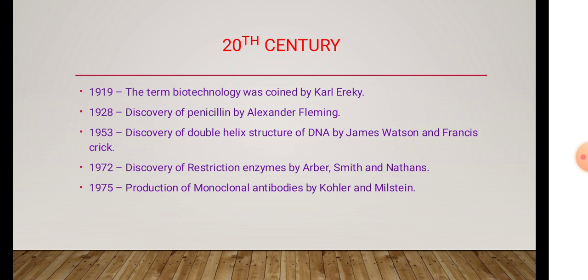In 1953, the discovery of the double helix structure of DNA — the double helix model by Watson and Crick. In 1972, the discovery of restriction enzymes. The restriction enzymes are endonucleases, exonucleases, and ligase — various genetic engineering tools discovered by Arber, Smith, and Nathans.